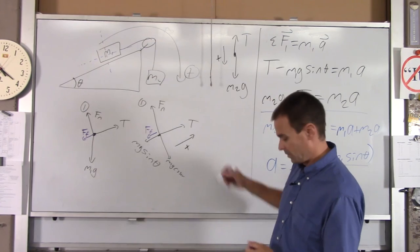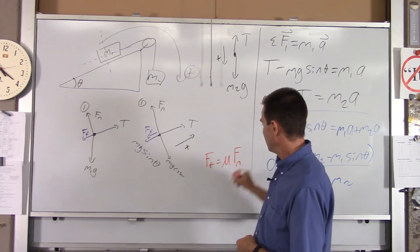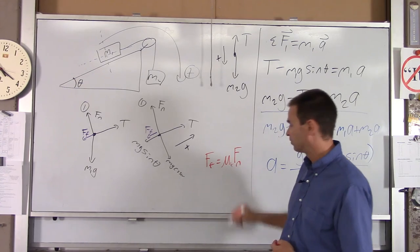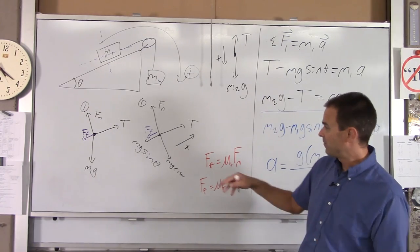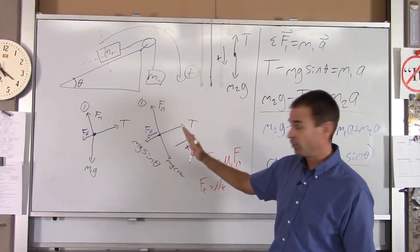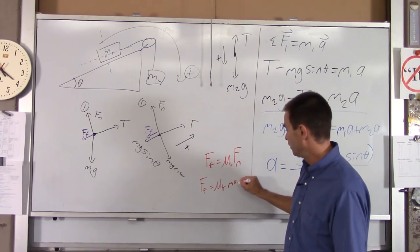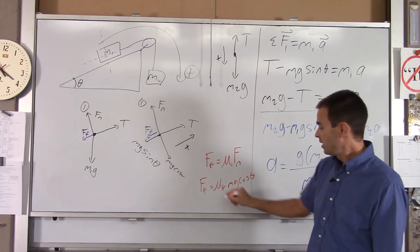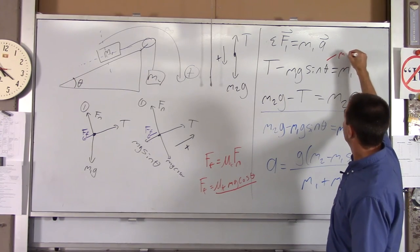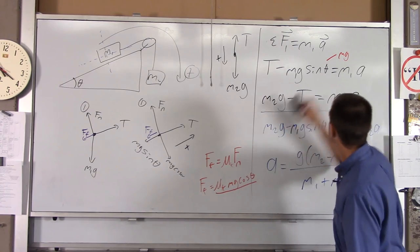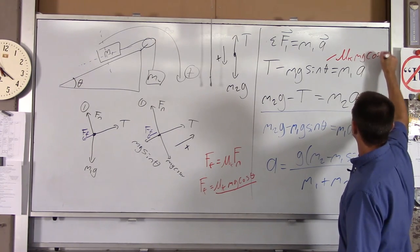How do we calculate friction? Well, FF equals mu Fn. And since it's moving, it's sliding along the incline as kinetic friction, so I'll put a little k there. So the force of friction equals mu sub k. Well, what's Fn? Well, Fn in this case is going to equal mg cosine theta, because we know the block is not accelerating perpendicular to the incline. So I'll replace Fn with mg cosine theta.